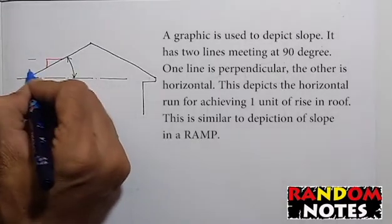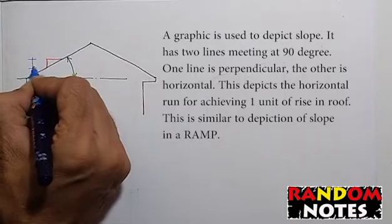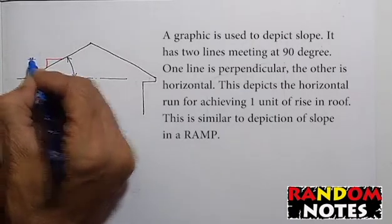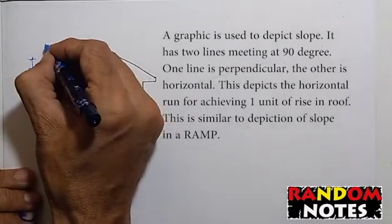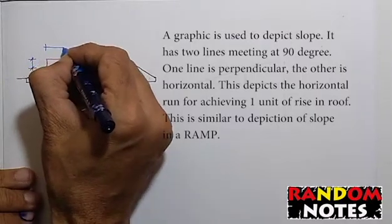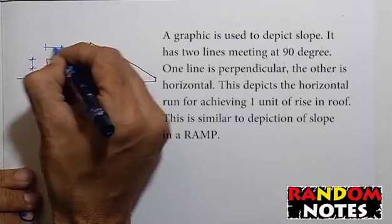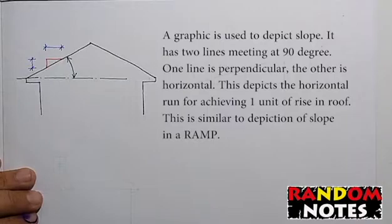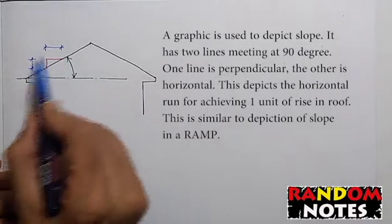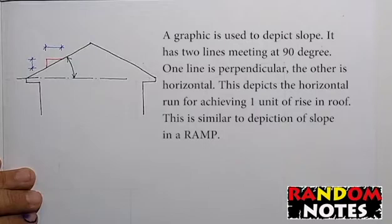Here, for a rise of one unit, a run of x horizontal units is taken by the roof. This triangulation fixes the correct or desired angle of the roof.